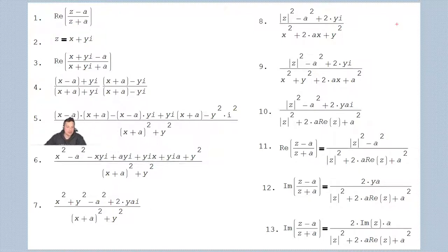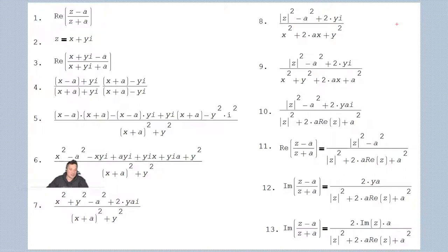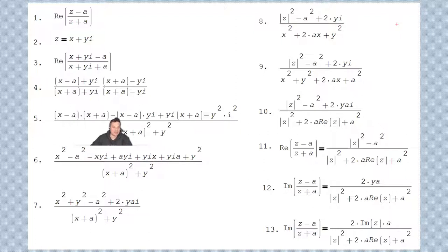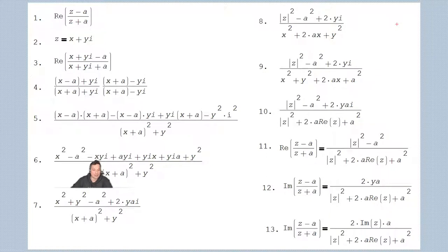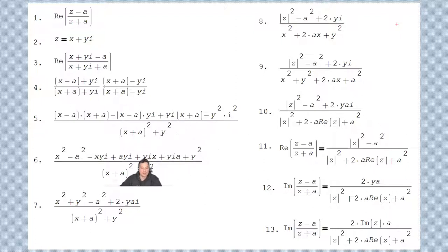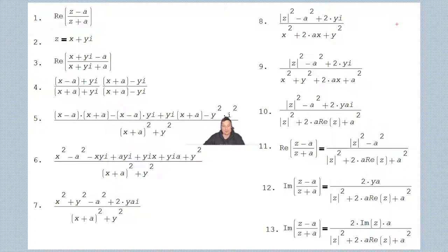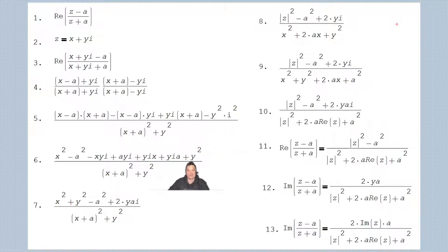Now let's simplify. FOILing x minus a with x plus a gives x squared minus a squared — the difference of two squares. Then distributing the negative one over x minus a gives negative xyi plus ayi. Distributing yi over x plus a gives positive xyi plus yia. And negative y squared times i squared: since i squared is negative one, negative one times negative y squared gives a positive y squared.